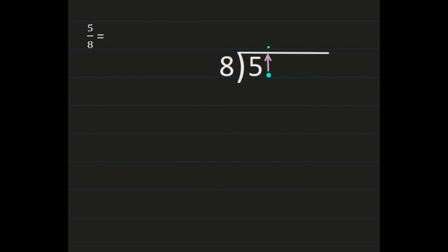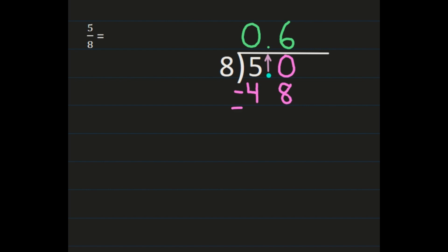So 5 divided by 8 is 0. We'll place the 0 in front of the decimal, and we can add a 0 behind the decimal in our dividend to get us started. So now we have 50 divided by 8, and 50 divided by 8 is 6. 6 times 8 is 48. Then we'll subtract, and when we subtract we get 2. We're going to add another 0 and bring it straight down because we want to go out far enough to see either do we have a repeating decimal or where we're going to need to round.